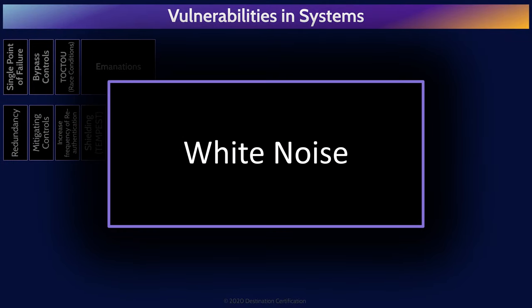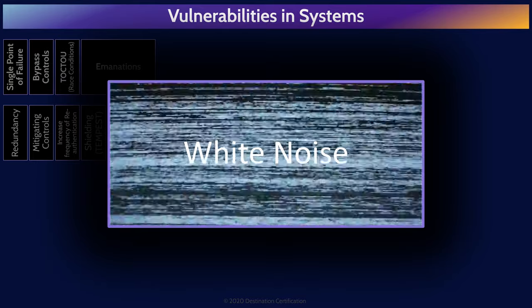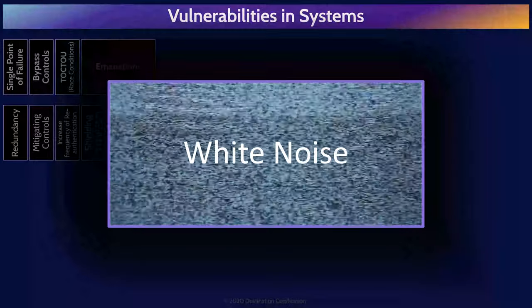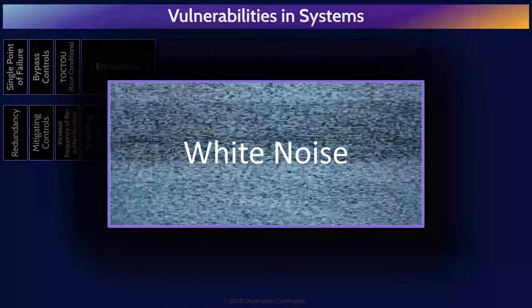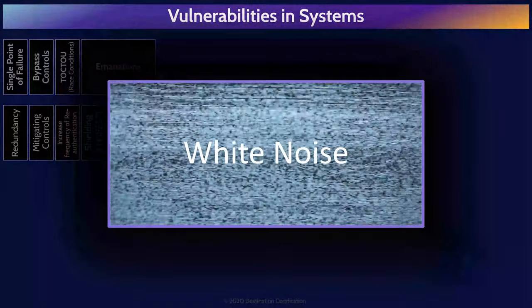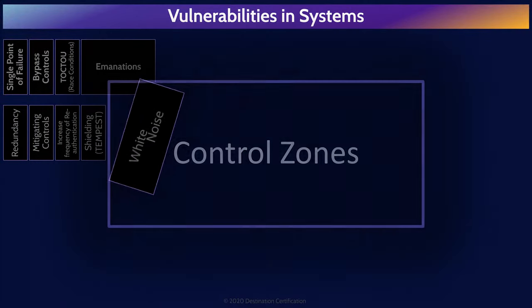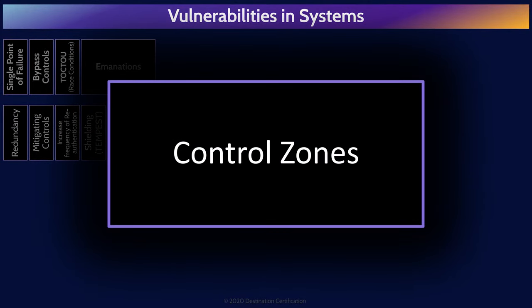The next method to reduce the risk of emanations is white noise — blasting out strong random signals and thus drowning out the weak emanations from a secure device in a sea of white noise. And finally, control zones, which means placing high-value systems in a physically secured zone. Essentially, put physical security controls in place to ensure only authorized individuals can get near high-value systems, thus preventing an attacker from getting close enough to detect the emanations from these systems.